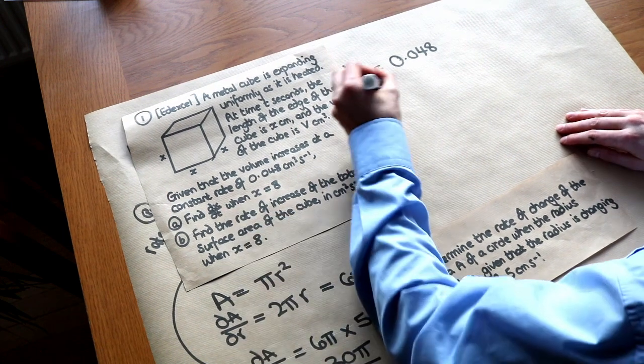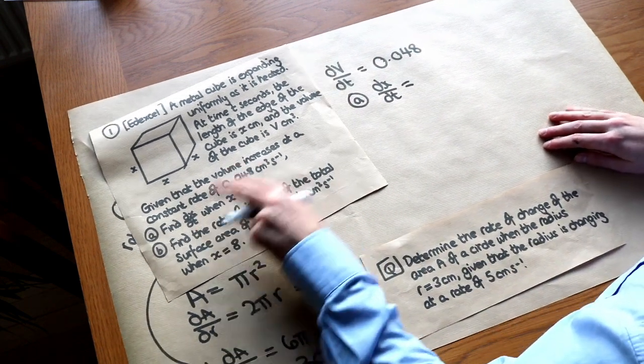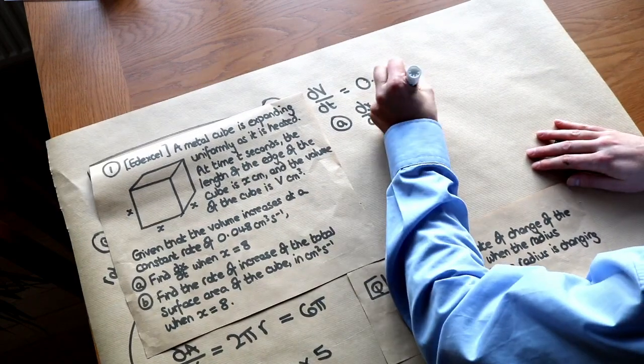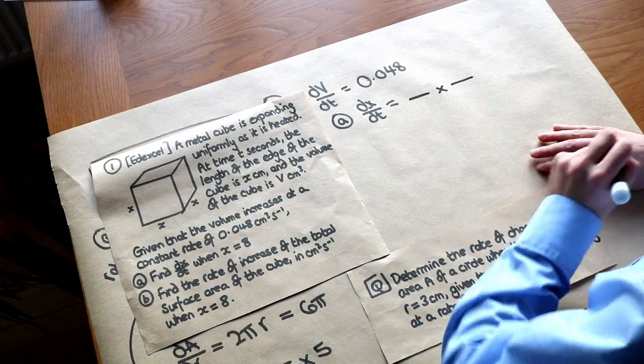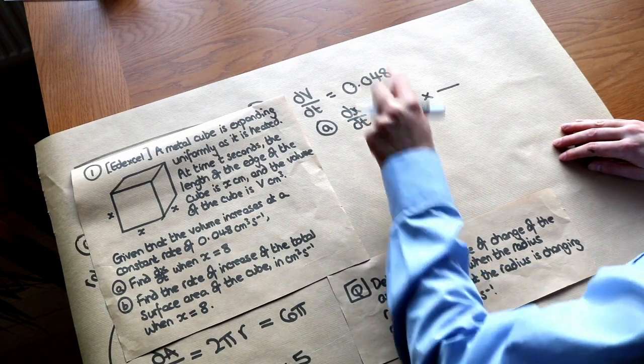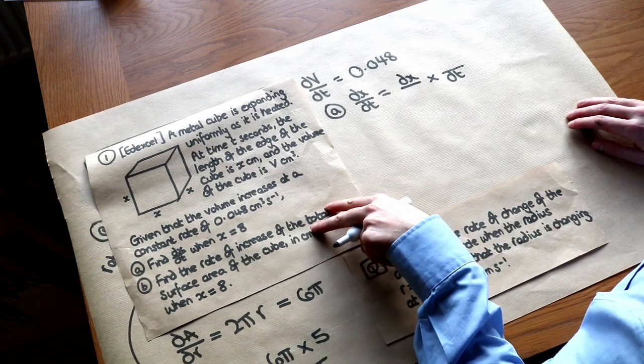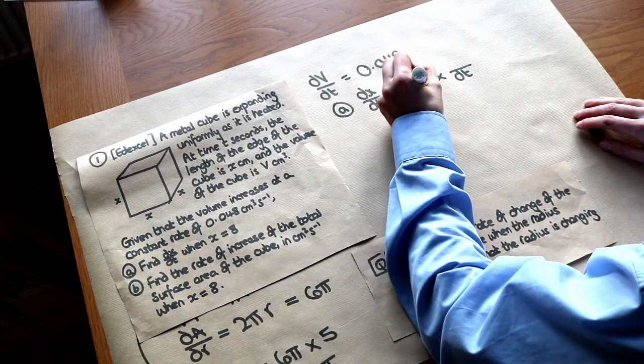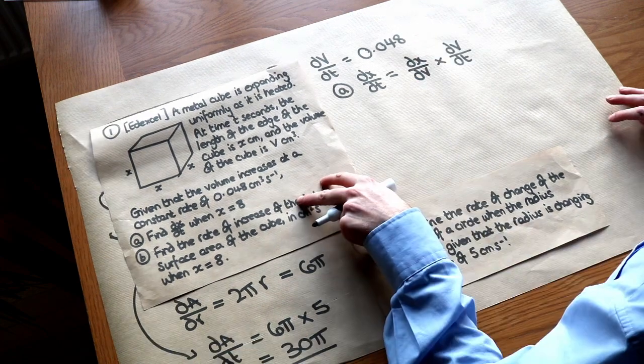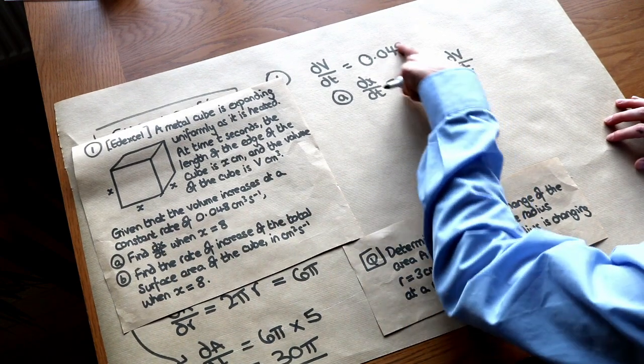We're trying to find dx over dt. That's what we're trying to find. And again, we can use the chain rule. We've got fraction times by fraction. As per my tip, we copy the dx here, we copy the dt here. What's the only other variable that's involved? Well, it's the v. So we've got dv here, dv here. As I said before, one of these values is always given. We can see the dv over dt is given.